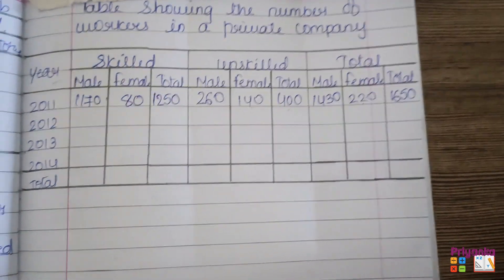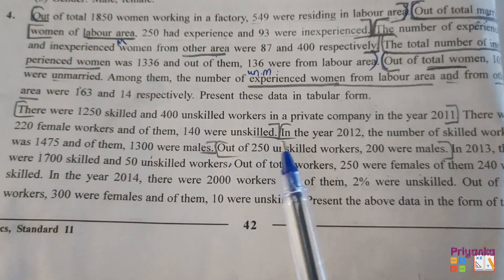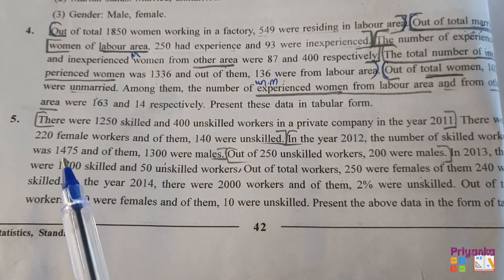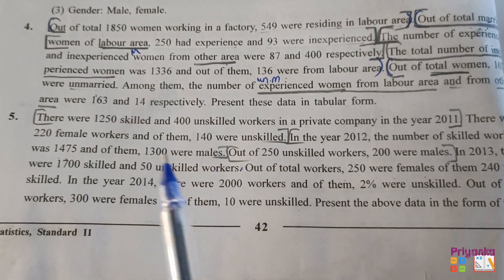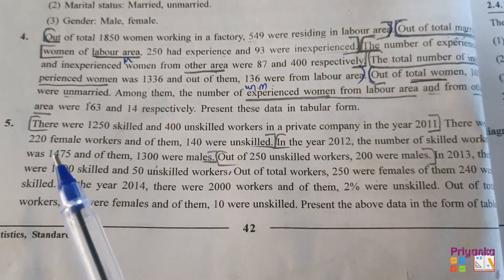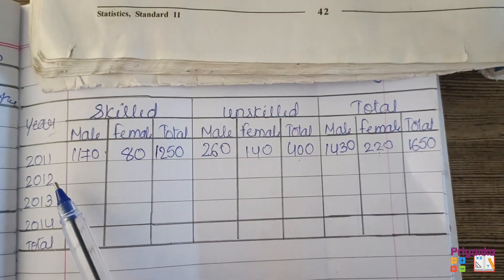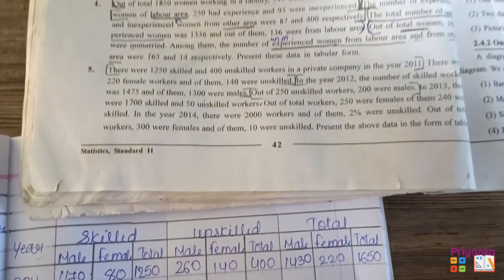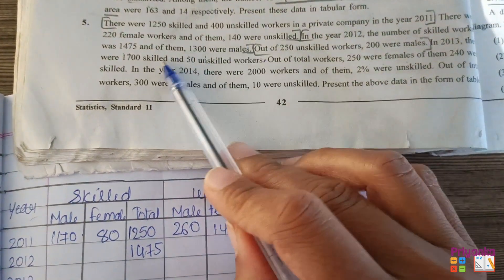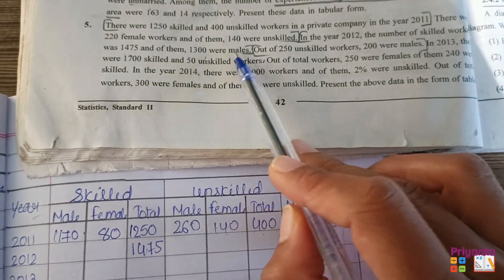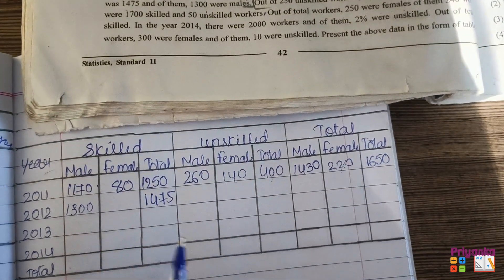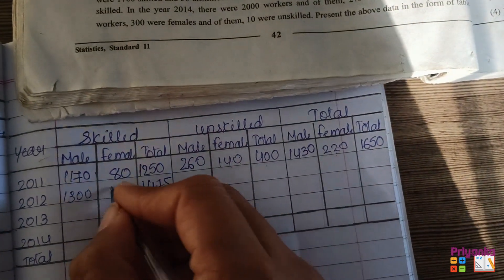In the same way, we continue with the next information. In the year 2012, the number of skilled workers was 1475, and of them, 1300 were male. Here they are talking about the total number of skilled workers being 1475. So we write down that 1300 were male. If we subtract, we get the difference of 175 females out of the total skilled workers.